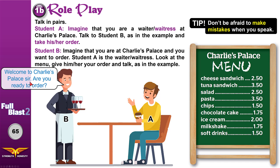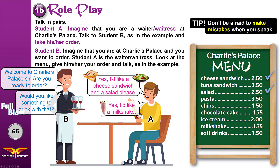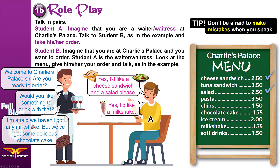Welcome to Charlie's Palace! Are you ready to order? Yes, I'd like a cheese sandwich and a salad, please. Would you like something to drink with that? Yes, I'd like a milkshake. I'm afraid we haven't got any milkshake, but we've got some delicious chocolate cake. Okay, I'd like to have that. Thank you for watching this video. If you like it, please share it with friends. I'll leave you now with the workbook exercises. See you in the next video!